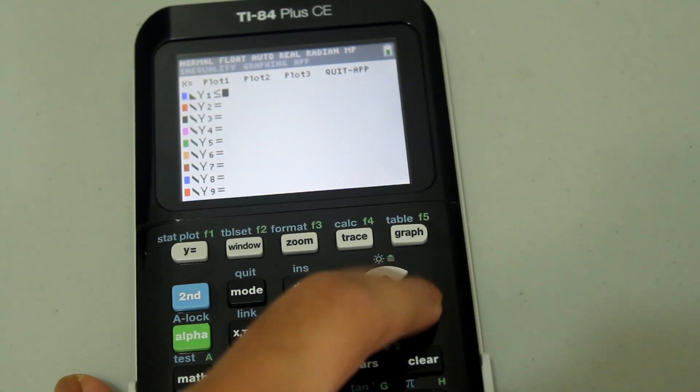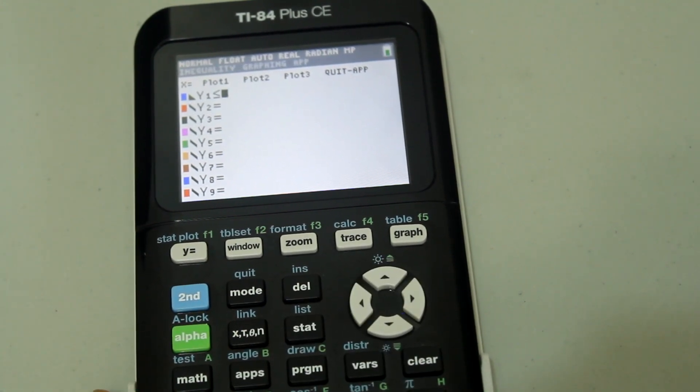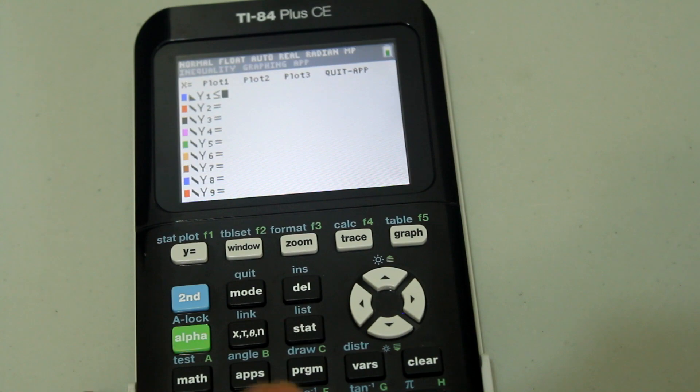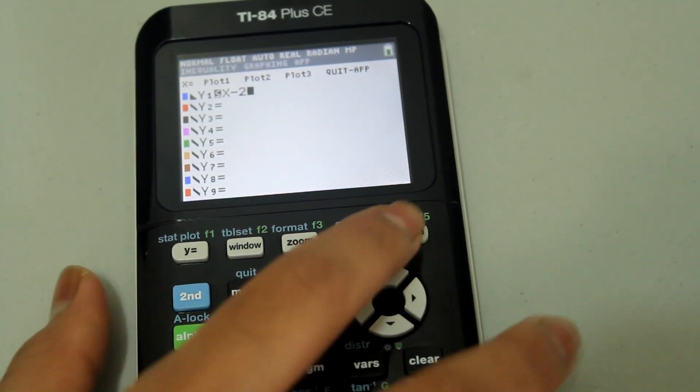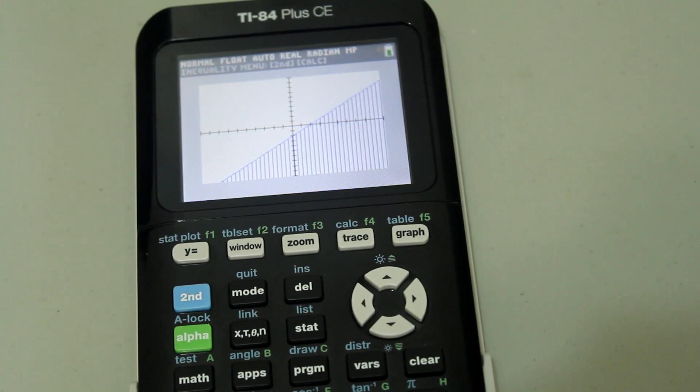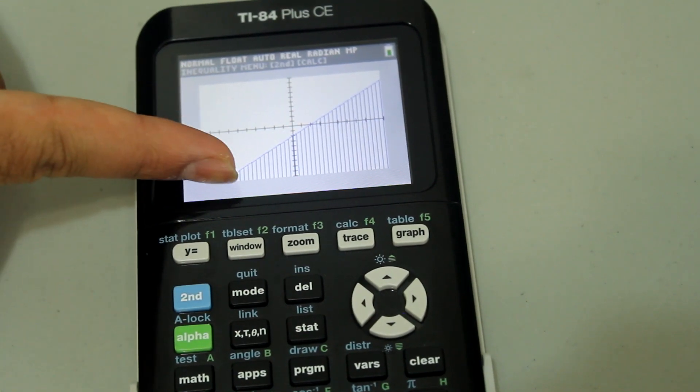Use the right arrow to the point where you can type an expression. Let's do something really simple like x minus 2. And now if you graph, you see that the calculator graphed the inequality.